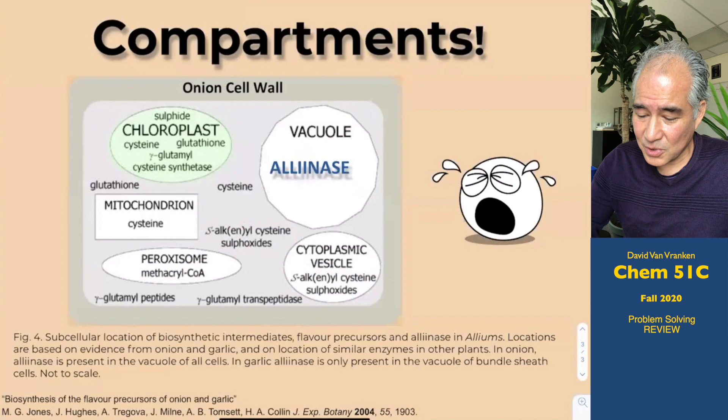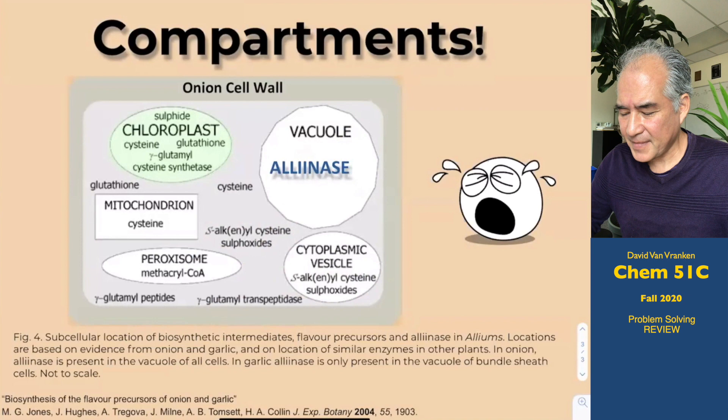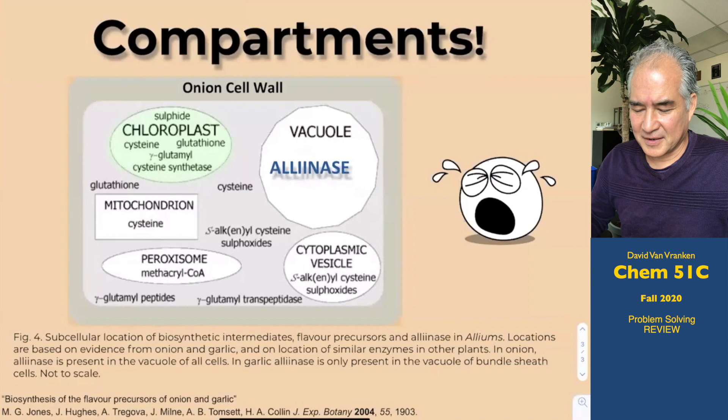It's not until you cut the cells open and allow those components to mix that you trigger the chain of events ultimately leading to formation of syn-propene thial S-oxide. It's just this compartmentalization that keeps those apart. You'll find many examples like that in nature — like indigo plants — where until you bust open the cell, nothing reveals that there's something colored or noxious inside.